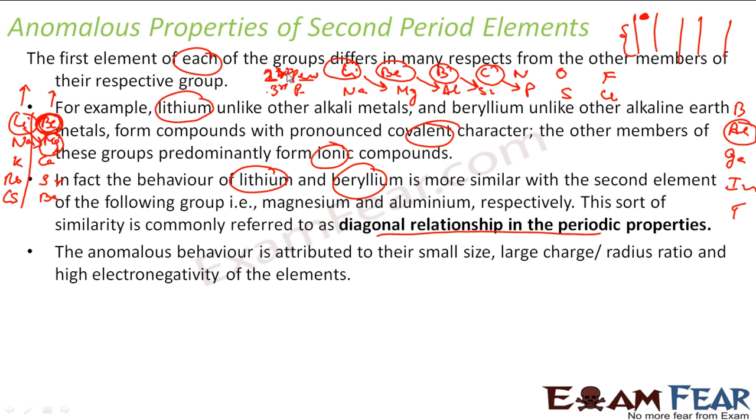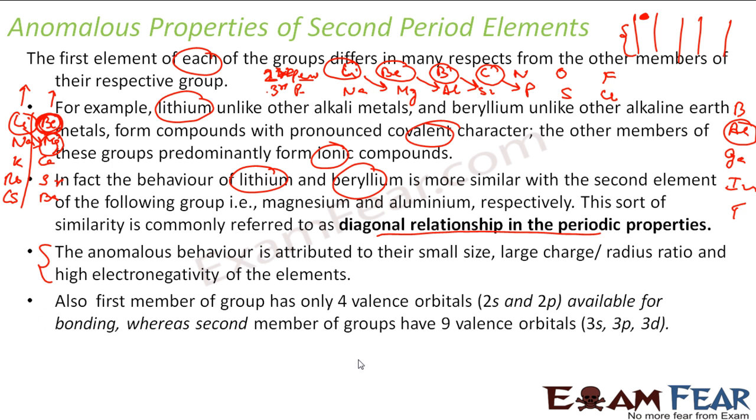And this is generally due to very small size. These guys for second period elements - they are very small size and very high charge to radius ratio. And they have very high electronegativity. And that's the reason why this anomaly happens.